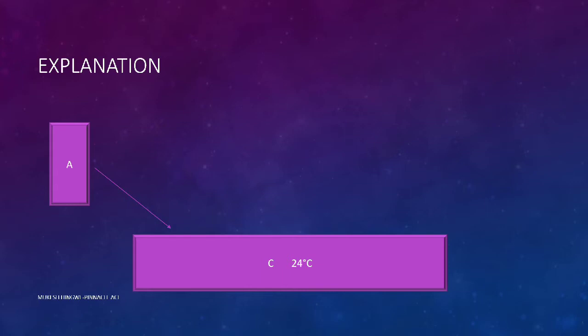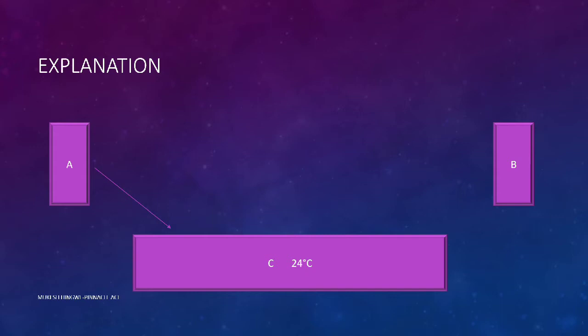Suppose A is in thermal equilibrium with system C — A has a temperature of 24 degrees Celsius, and hence C also has a temperature of 24 degrees Celsius. As per the law, B is also in thermal equilibrium with system C, which also has a temperature of 24 degrees Celsius.